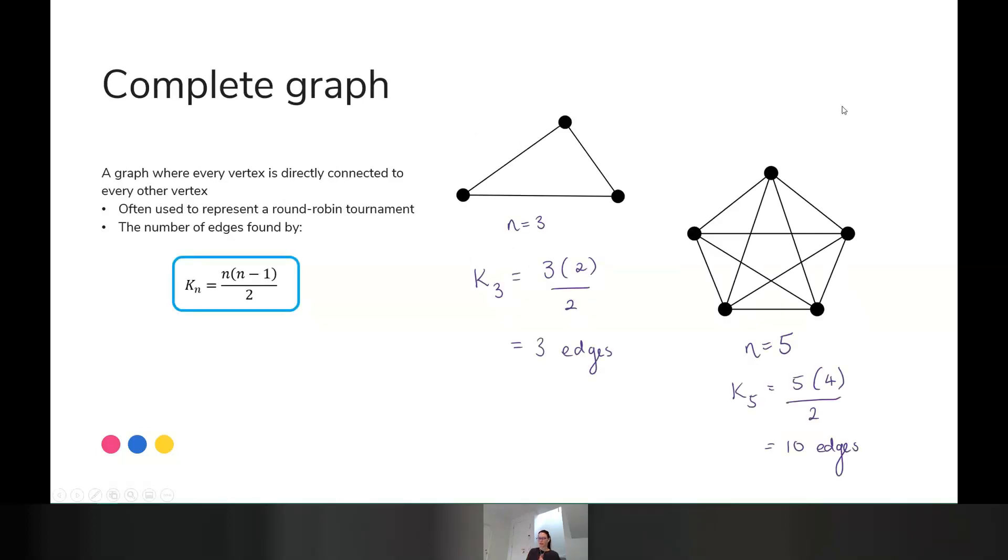A complete graph. I said different to a connected graph. A complete graph is a special type where every vertex has a direct one-step connection to every other vertex in the graph. We have a little rule that we can use to help us find the number of edges.